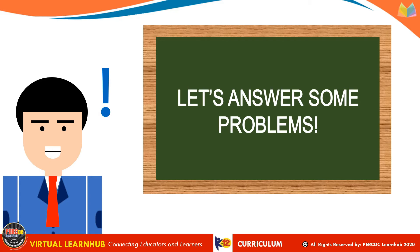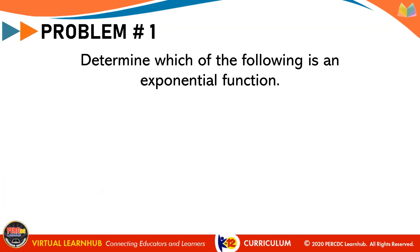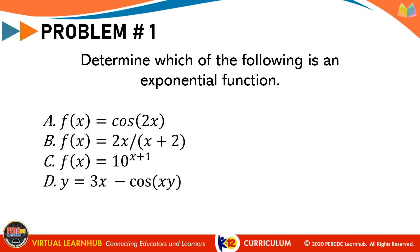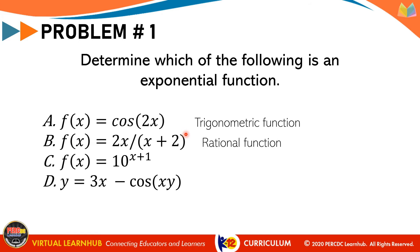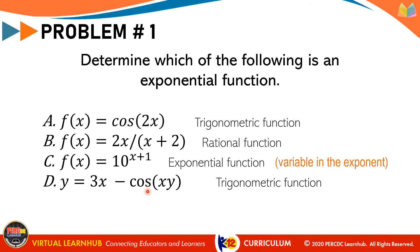Let's try to answer some problems. Problem number 1: determine which of the following is an exponential function. Letter A is a trigonometric function because of the cosine. Letter B is a rational function because it has the division sign — it is the ratio of two expressions. Letter D is a trigonometric function because of the cosine. And since we have no other choice, C is the exponential function because of the variable or argument in the exponent.